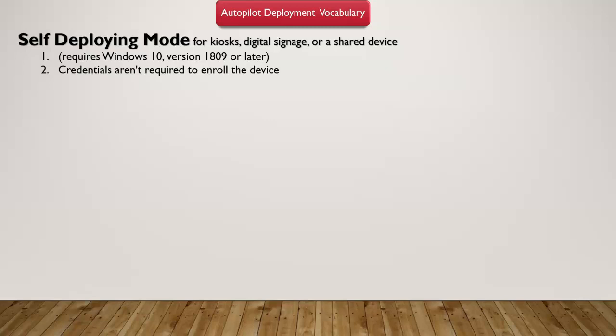These specific devices might be used in your kiosk or maybe for testing purposes. They are mostly joining based on your certificates or some other mechanisms, and these require at least Windows 10 version 1809 onwards. So self-deploying mode is a mode which will enable the deployment to be automatically deployed.